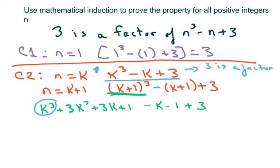So, pull out these 3. Because we already know that 3 is a factor of that. So, we have k cubed minus k plus 3.